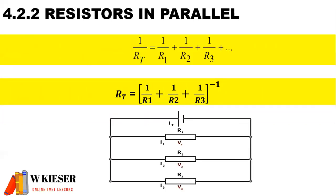For resistors in parallel, the first formula available on the formula sheet is: 1 over RT is equal to 1 over R1 plus 1 over R2 plus 1 over R3. Using this formula, remember that at the end of the calculation you need to invert the answer to get the correct result. However, an alternative is to put everything inside brackets all to the power of minus 1, which reduces calculation errors.